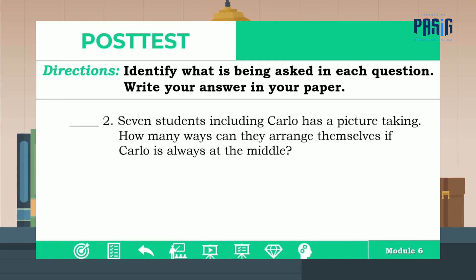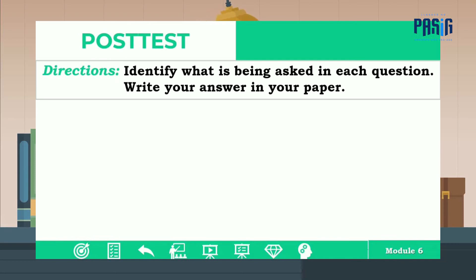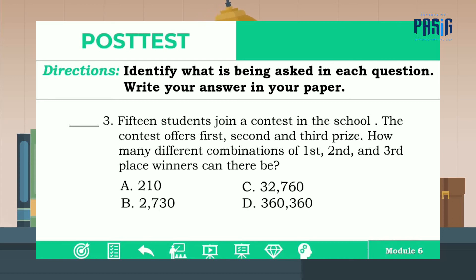Number two: seven students including Carlo have a picture taking. How many ways can they arrange themselves if Carlo is always at the middle? The correct answer is letter C. For number three: 15 students join a contest in the school. The contest offers first, second, and third prize. How many different combinations of first, second, and third place winners can there be? The correct answer is letter B.